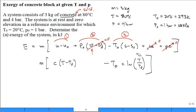What you can do is you pull out that specific heat and you're left with T minus T naught minus T naught times natural log of T over T naught.